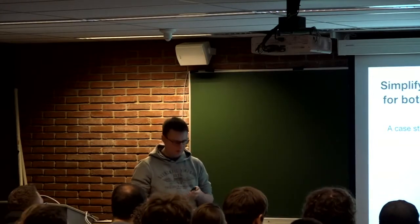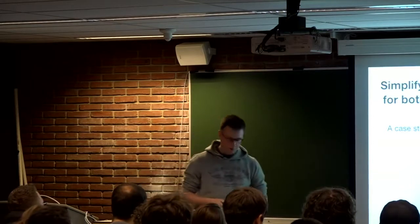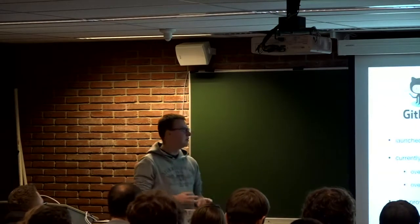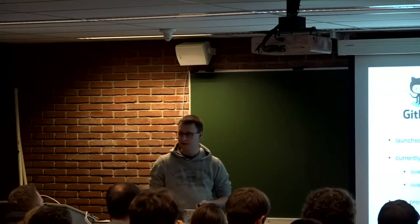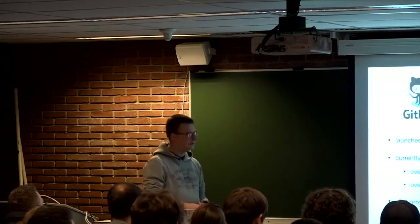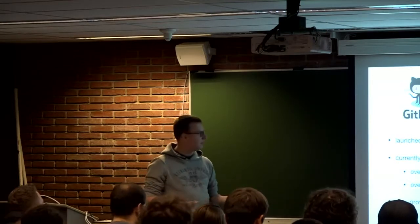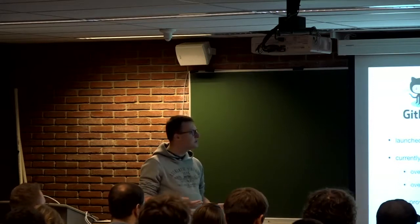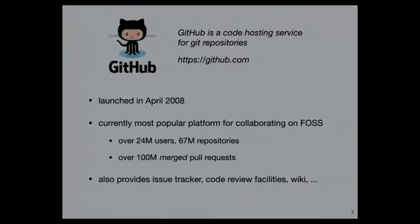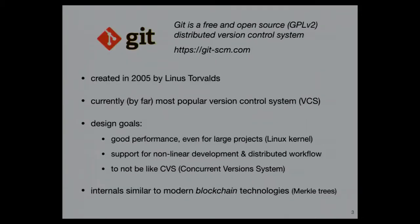What I want to talk about today is the work that we have done in EasyBuild to make it easy for people to contribute back, and I'll explain why we're doing that and how. First off, I'm sure most people here know what GitHub is. It's basically the place where open source is being developed right now — 24 million users, over 60 million repositories, and they recently crossed a hundred million merged pull requests.